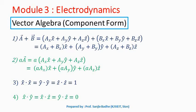To add two vectors a bar plus b bar: a bar is written as ax x cap plus ay y cap plus az z cap, and b bar is written as bx x cap plus by y cap plus bz z cap. When adding, the respective components are added together — the x component of a bar is added to the x component of b bar, y to y, and z to z. So a bar plus b bar equals (ax plus bx) x cap plus (ay plus by) y cap plus (az plus bz) z cap.